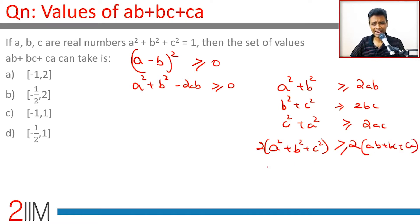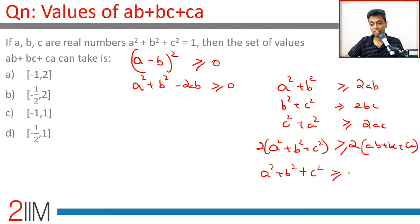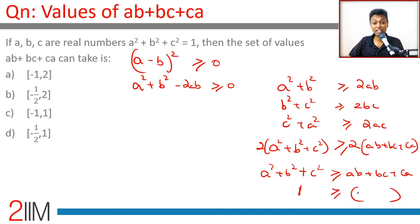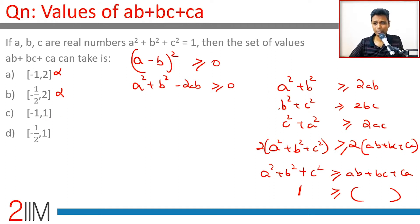This is the famous AM-GM inequality done with squares. So a² + b² + c² ≥ ab + bc + ca. Since a² + b² + c² = 1, the maximum value ab + bc + ca can take is 1.